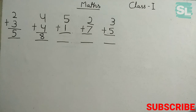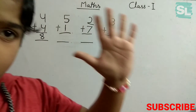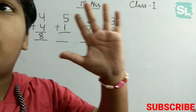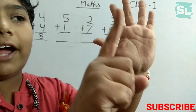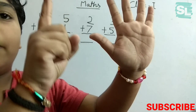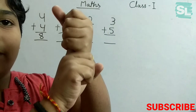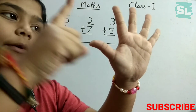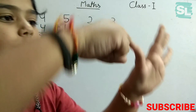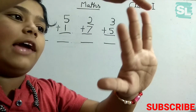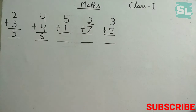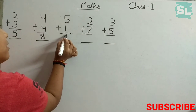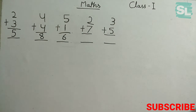Next one is 5 plus 1. I have 5 fingers in the left hand, 1 finger in the right hand. Mix them together and count: 1, 2, 3, 4, 5, 6. It is 6. So the answer is 6.